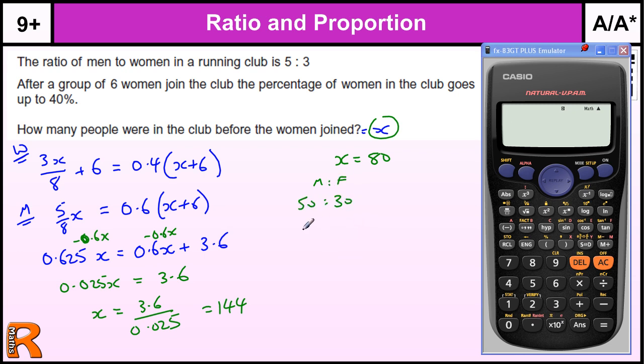And then if we add 6, then we have 50 and 36. Now is 36 40% of 86? So 0.4 times 86 is 34.4. So no, it's too small.